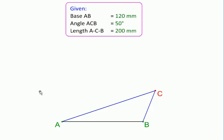Here we'll be solving a geometric problem: plotting triangle ABC with these three bits of information given to us. Number one: the base AB is 120 mm, angle at C is 50 degrees, and the sum of these two sides or the distance A to C to B is 200 mm. Let's start with the first two bits of information.